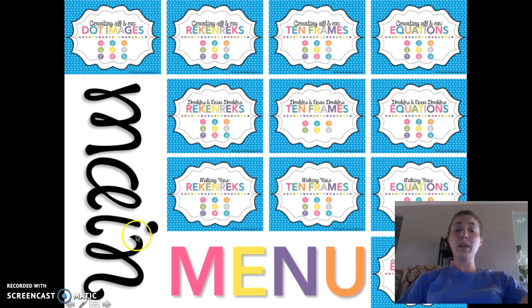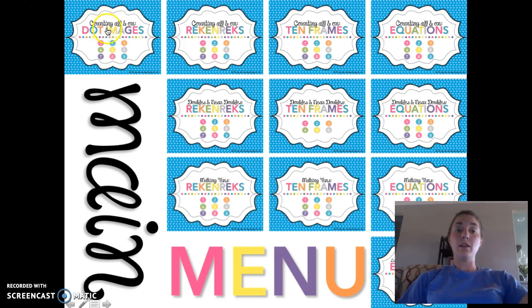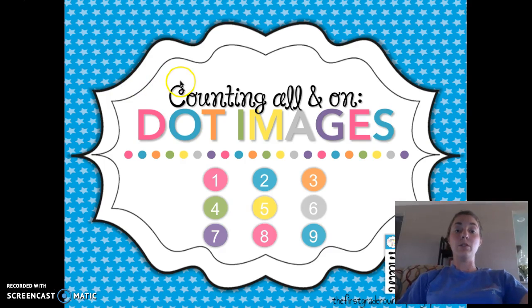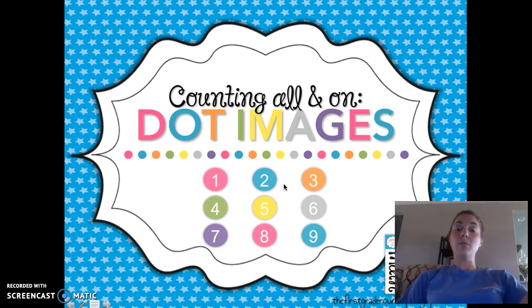This is the main menu — whenever we start Number Talks, this is where we start. This is the page that the kids see. If I want to go to dot images, I'll just click on that screen and it will link me into all of the dot images. Once I get there, you'll notice there are nine circles. In the book Number Talks, there are nine lessons for dot images in the counting all-in-all section for first grade.